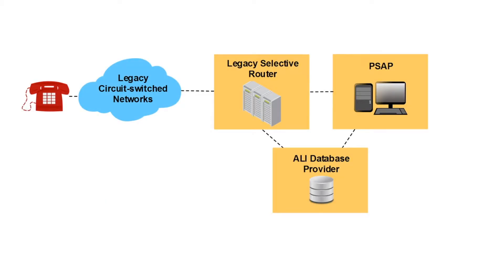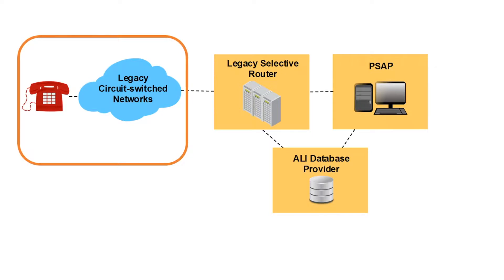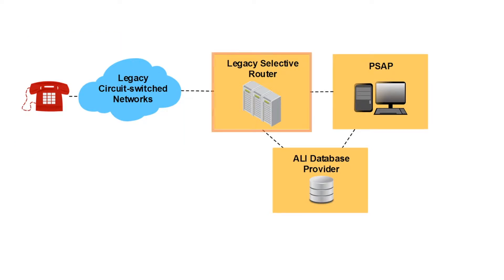The current 9-1-1 infrastructure is designed to transport emergency voice calls from wireless, wireline, and VoIP access networks. Within the signaling information of the emergency call, the calling party's phone number, referred to as the Automatic Number Identification, or ANI, is transmitted to one of 26 Class 4 telephone switches, or tandems, throughout the state of Texas.